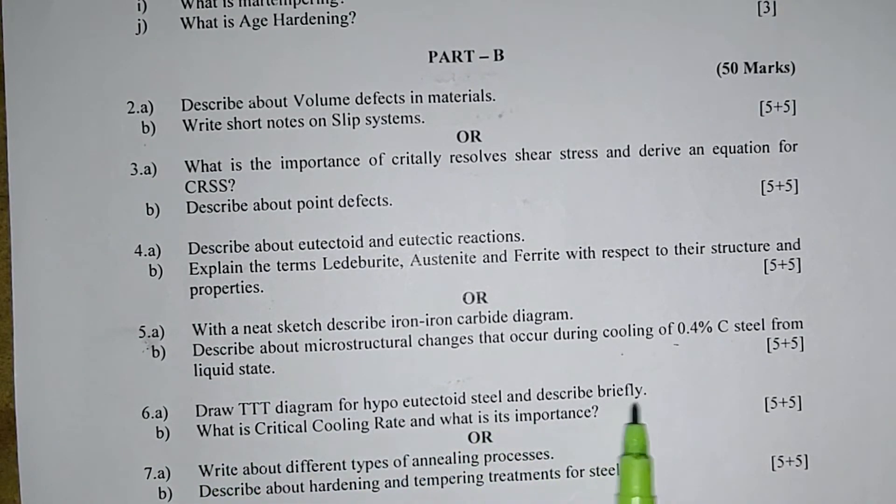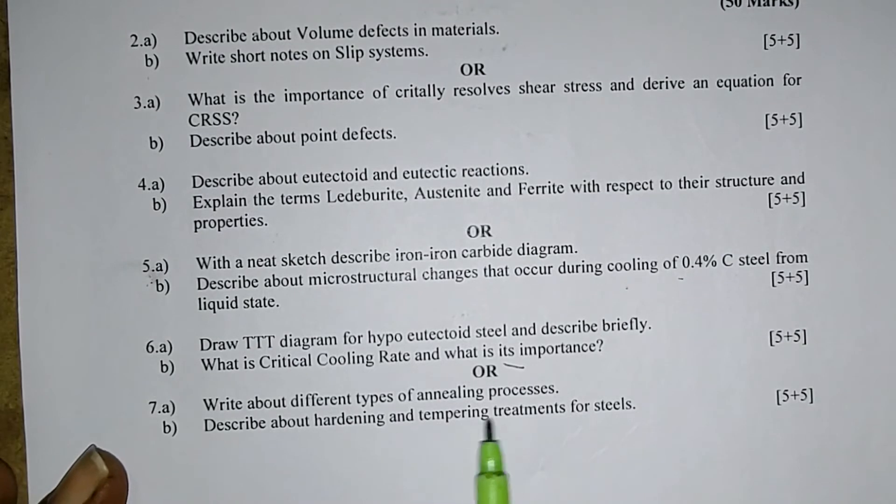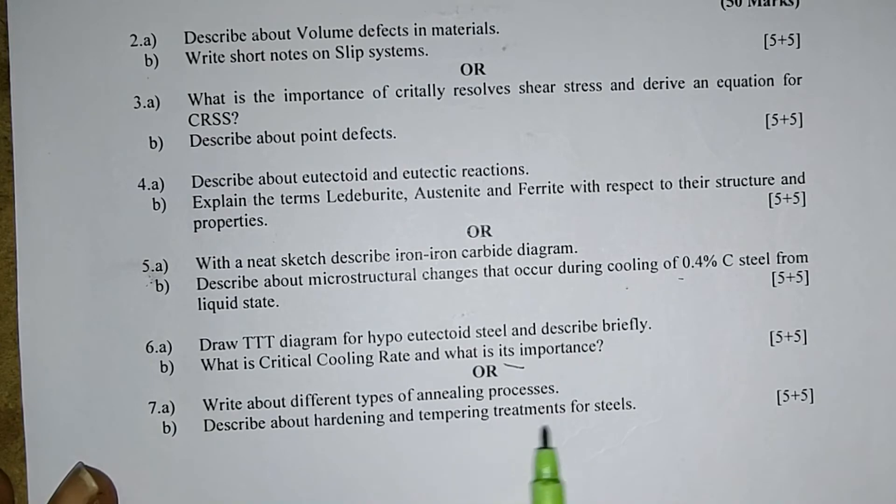Draw TTT diagram for hypo-eutectoid steel and describe briefly. What is critical cooling rate and what is its importance? Write about different types of annealing processes. Describe about hardening and tempering treatments for steels.